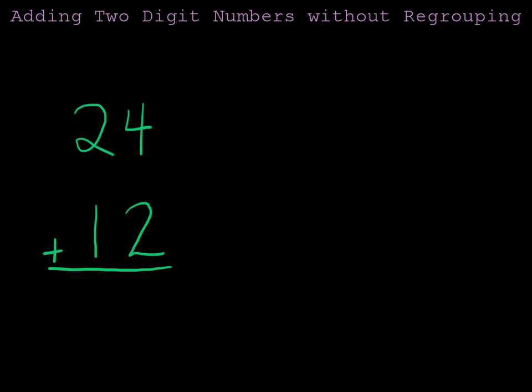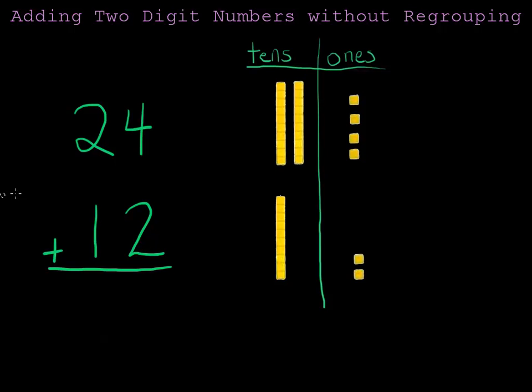Let's instead first draw these numbers with pictures so that we can really see what we're doing here. 24 has two tens and four ones. Two tens and four ones.